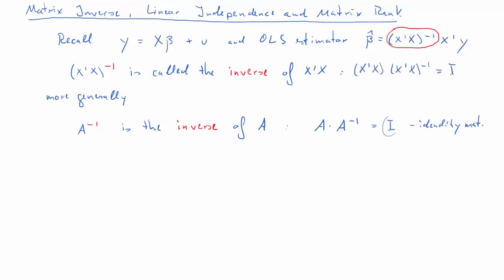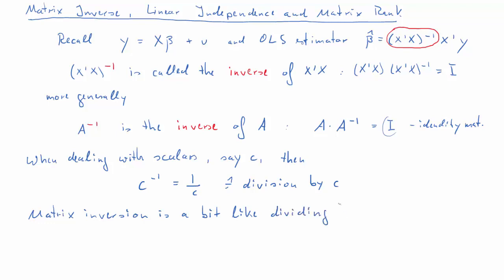So one property of the inverse is that if we calculate A times A inverse, what we get is the identity matrix. So if we calculate x prime x times x prime x inverse, we also get the identity matrix. So it's always a matrix multiplied with its inverse gives the identity matrix, the definition of an inverse. When we do the scalars, say C, then C to the power of negative 1 really means 1 over C. So it's really division by C.